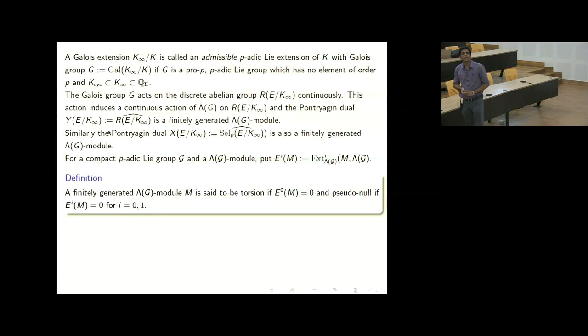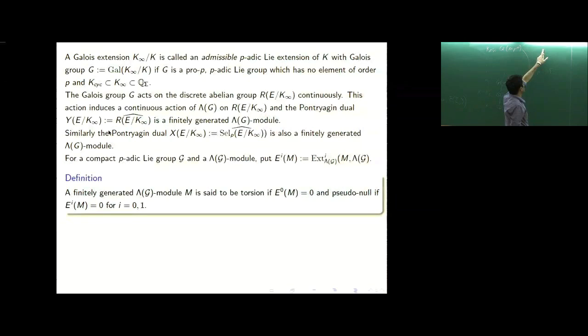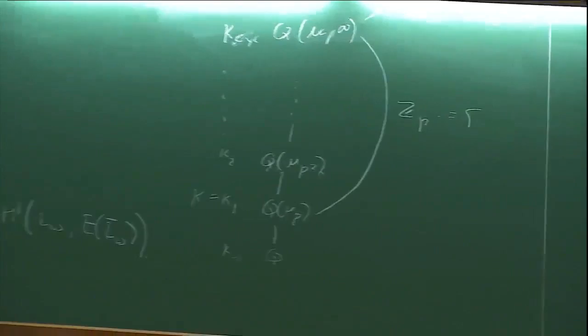We will be considering fine Selmer and Selmer groups over what are called admissible p-adic Lie extensions. That means we have K_cyc, and over this we consider some large extension K_∞ such that the Galois group of K_∞ over K is a pro-P p-adic Lie group without P-torsion, and furthermore K_∞ is inside Q_sigma. Here sigma could be strictly larger than this set; it can have other primes also. This group will be denoted by G.